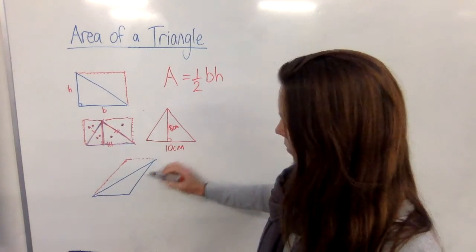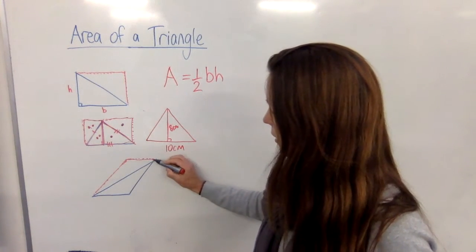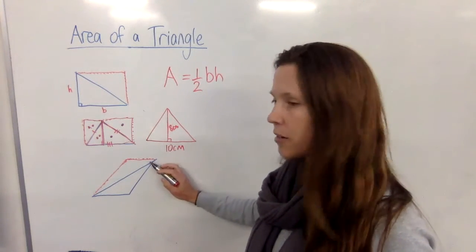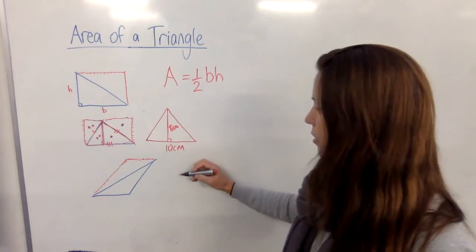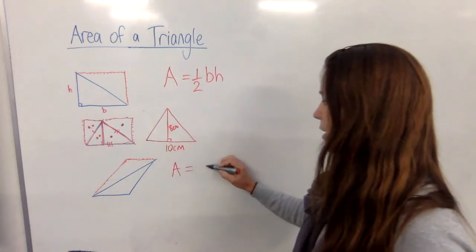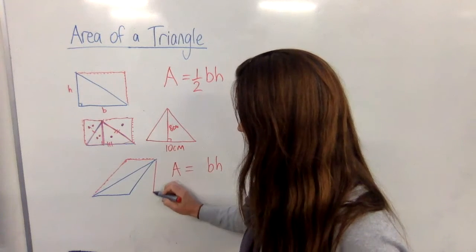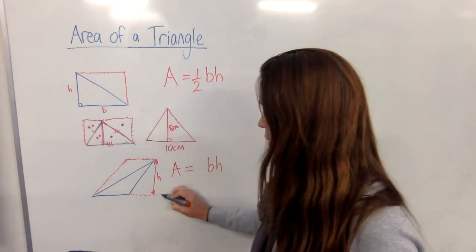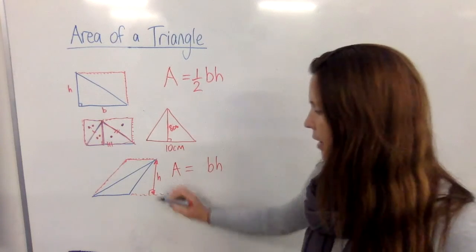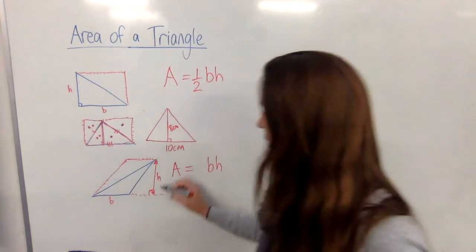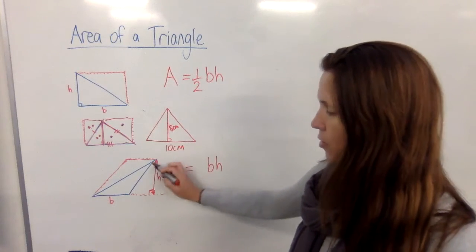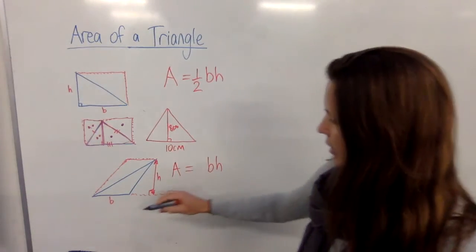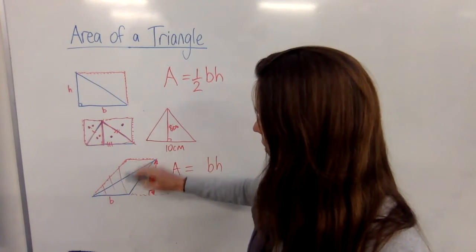Okay, now this length will be the same as this length, and this length will be the same as this length, so what we've actually created here now is a parallelogram. And we already know that parallelograms have area equals base times height, where the height is going to be the vertical height straight up and down which meets the base at right angles. So if this is the base here and this is the vertical height here—not the slanty height, the vertical height—we can see that area equals base times height would be the area of our whole parallelogram.